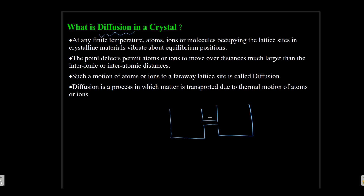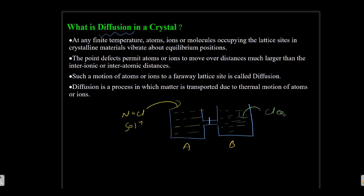A stopper is placed over there that won't allow the solutions to get mixed. Now let us consider chamber A has a salt solution and chamber B has clear water. So initially, the concentration of sodium chloride in A was high and there was zero sodium chloride concentration in B.